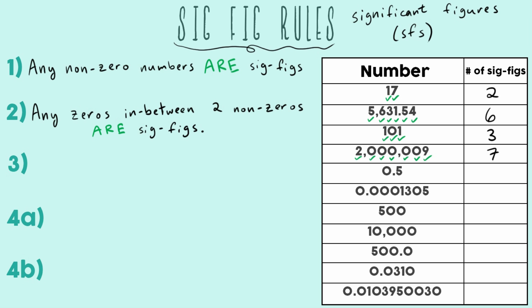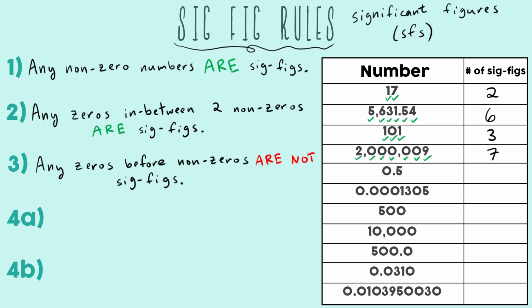Moving to rule number three: any zeros before non-zeros are not SIGFIGs. We already dealt with zeros in the middle; now we're talking about zeros that happen before non-zeros — numbers one through nine. For 0.5, the five is a SIGFIG, but the zero before it doesn't count. It doesn't matter what place you're in — if it's before the numbers, it won't count. So 0.5 has just one SIGFIG.